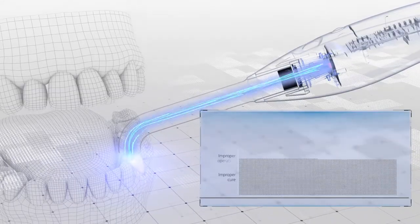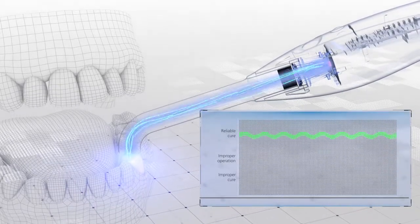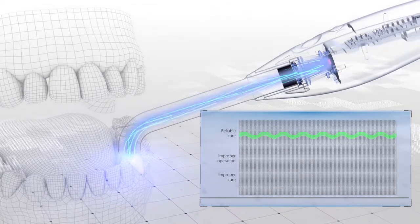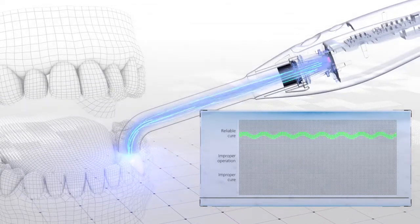The sensors of the BluePhase PowerCure will measure the reflection of the emitted light. This helps the device to automatically recognize whether the light guide is directed towards a reflecting surface, such as a composite material or a tooth.